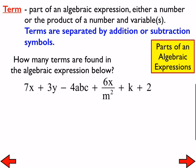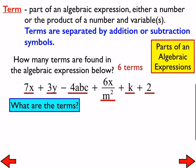It's 6. There are 6 terms. Going back to the definition: part of an algebraic expression that is either a number or the product of a number and variables. That last 2 is a number, but everything else is a product of a number and a variable. The 6 terms are: 7x, 3y, negative 4abc, 6x over m squared, k (or 1k), and 2.